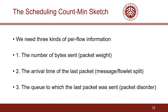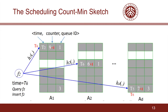For example, for LAS, if the last packet of a flow was sent to the queue with the lowest priority, then a newly incoming packet of this flow can only be sent to the queue with the lowest priority to avoid packet disorder. To provide the above information, we propose a variant of the count mean sketch called SCM Sketch, which extends each counter of the CM sketch to a bucket consisting of three fields: time, counter, and QID. Similarly, the SCM Sketch has D arrays, each of which is associated with a pairwise independent hash function.